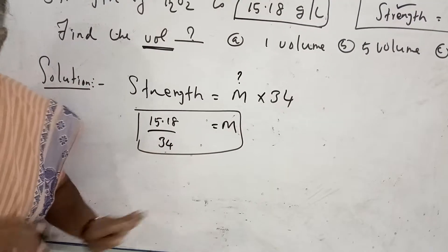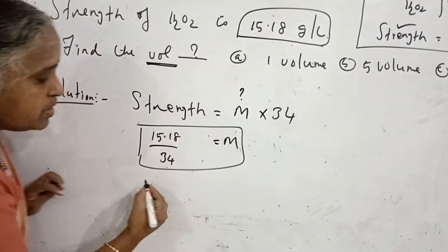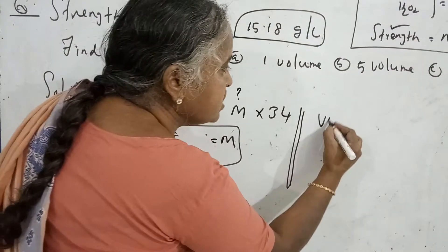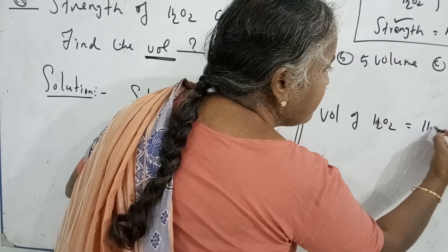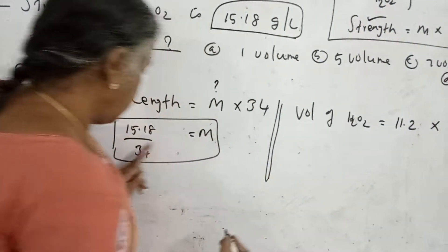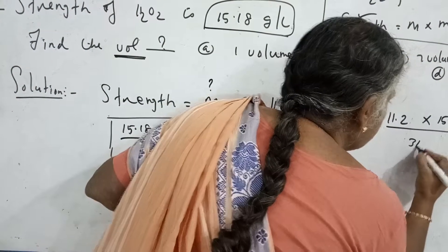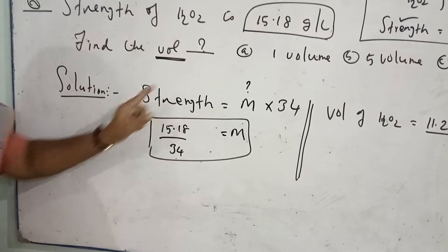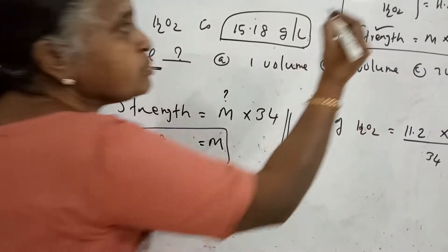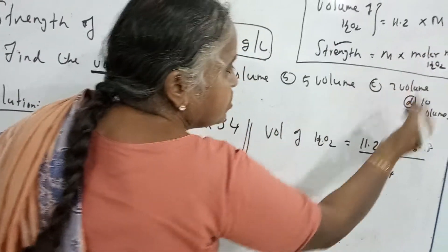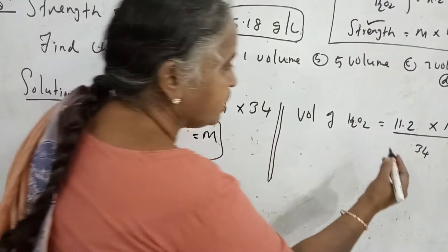The important point is: at each step, you should not simplify — you have to go to the final step. The next step is: Volume of hydrogen peroxide is equal to 11.2 multiplied by molarity. The molarity is 15.19 divided by 34. So you write: 11.2 multiplied by (15.19 divided by 34).